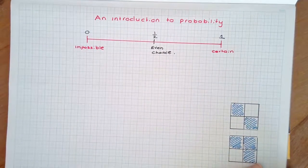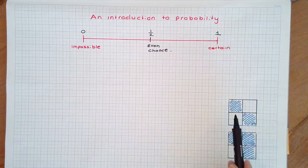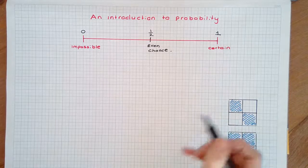An equally likely event is when all outcomes have the same chance, likelihood, or probability of occurring.